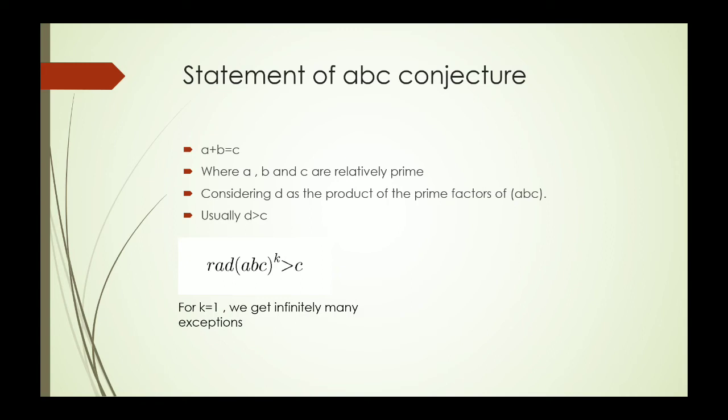Now this proof, the proof of this ABC conjecture was claimed by the Japanese mathematician Mochizuki about eight years from now. Many mathematicians have already considered that this proof had certain flaws and was not completely correct.